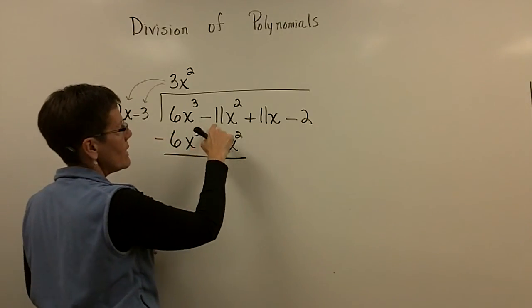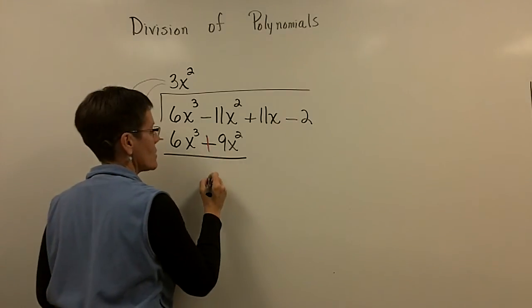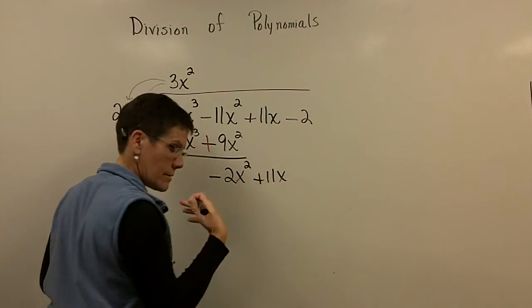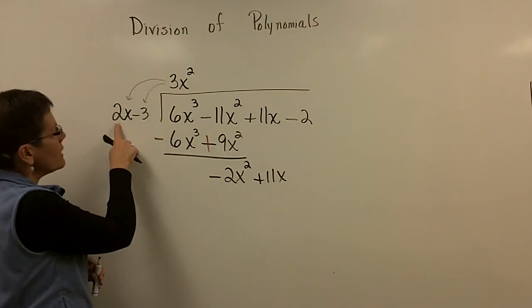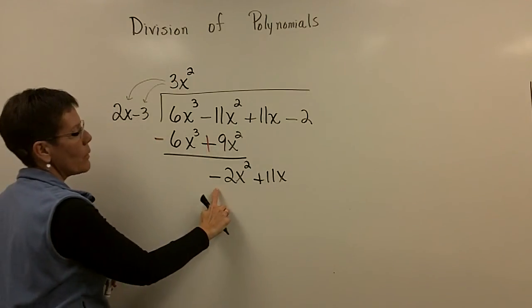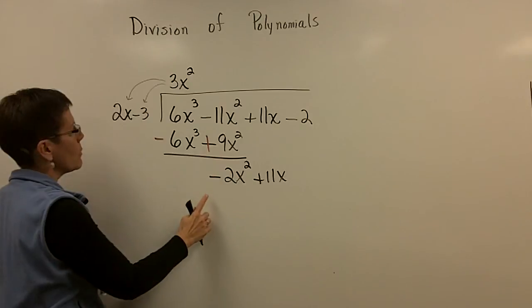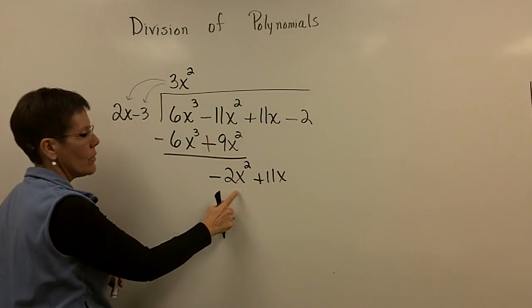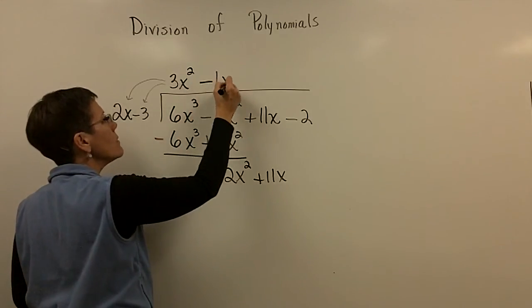Gone. Minus 11x squared plus 9x squared is a minus 2x squared. And then let's start the process again. I've got a 2x here. I want to put something up here that when I multiply it by 2x, I get a minus 2x. If you need to write the minus 1 down there, that's fine.